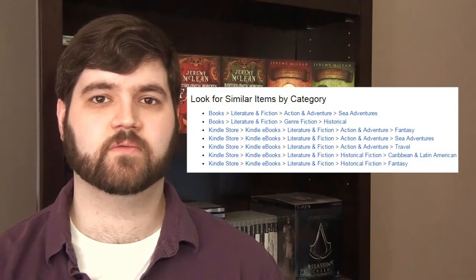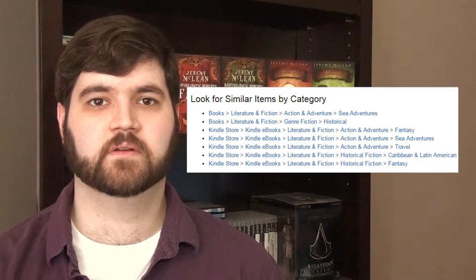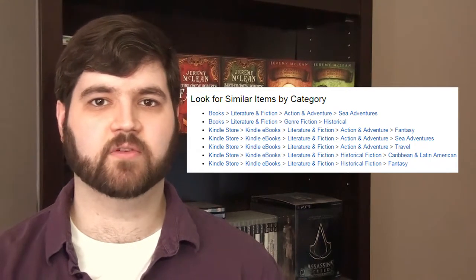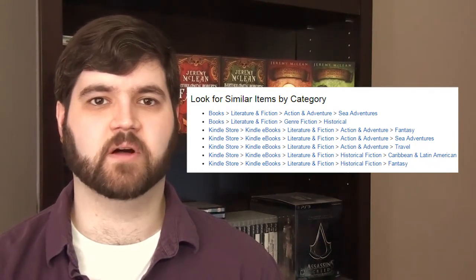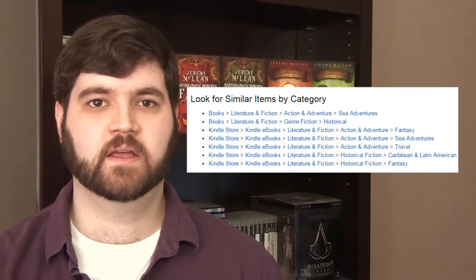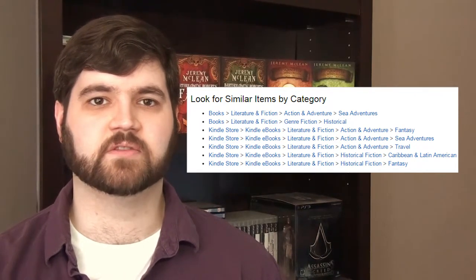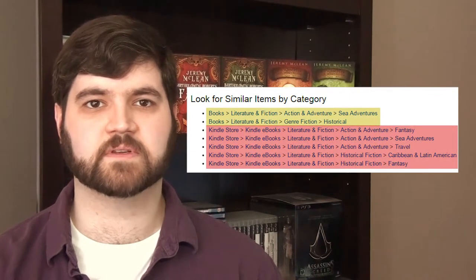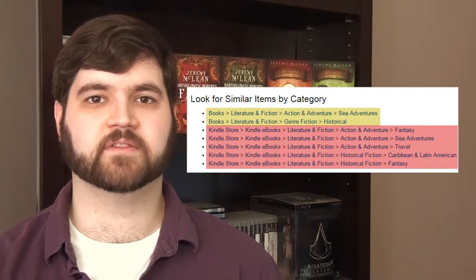One way you can go about choosing your category is by looking at what category your competition is in. If you know of a book that's similar to your own, go to its Amazon page and scroll down to the bottom to the Look for Similar Items by Category section. Here you'll be able to see what categories the book is in. But the category at the end might not necessarily show up as an option to choose because of how Amazon sorts categories versus the BISAC format. You'll also notice that it's separated into two sections, Books and Kindle Store, which will further divide your category options.